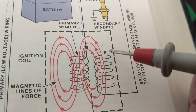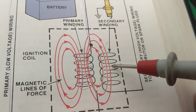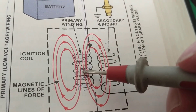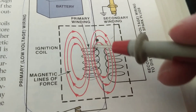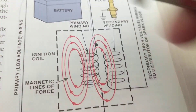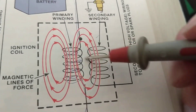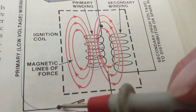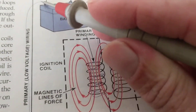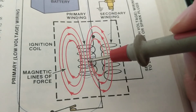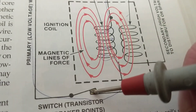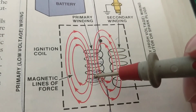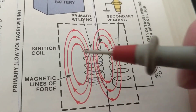The secondary might have thousands of turns compared to the primary. Current flows through the primary, inducing a voltage through the secondary. This happens when we break the circuit of the primary — we break it with a switch, on and off. We need that varying voltage from the switch being turned on and off.